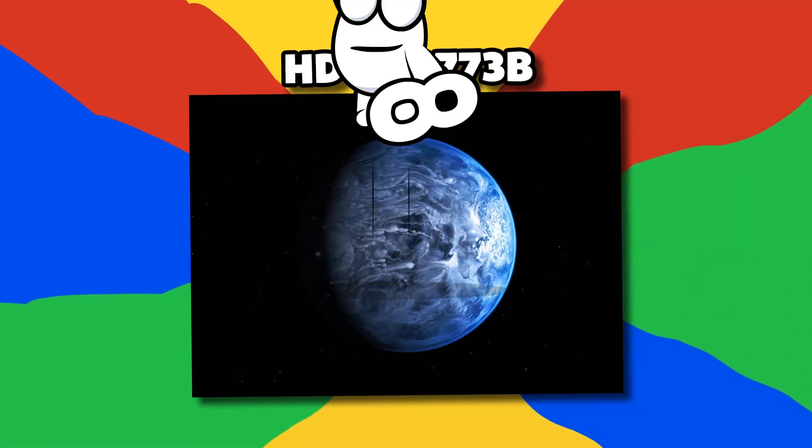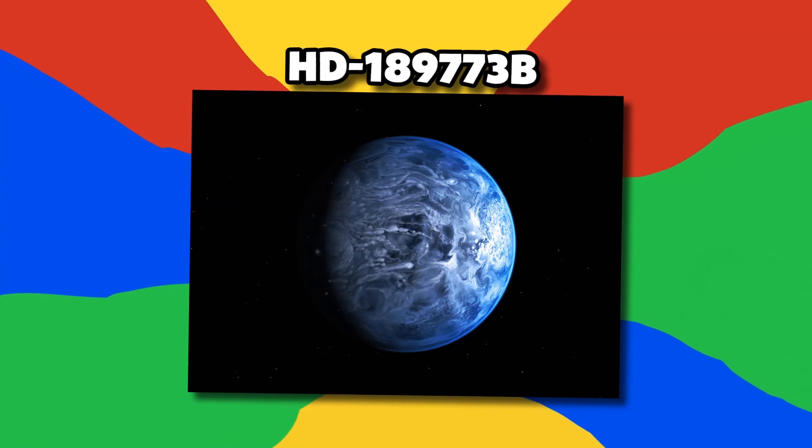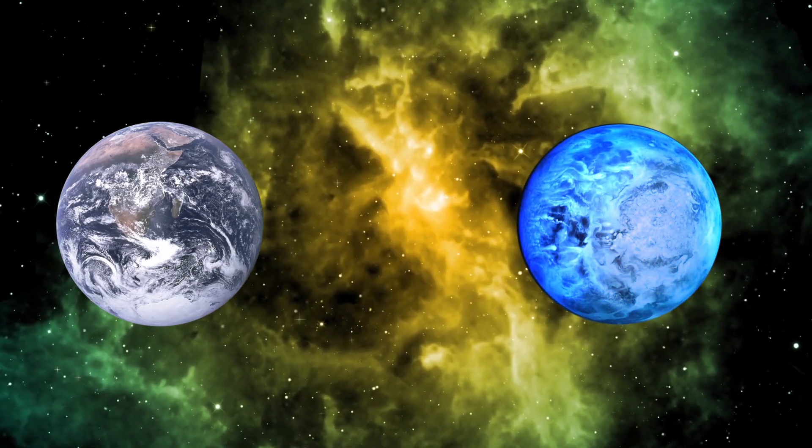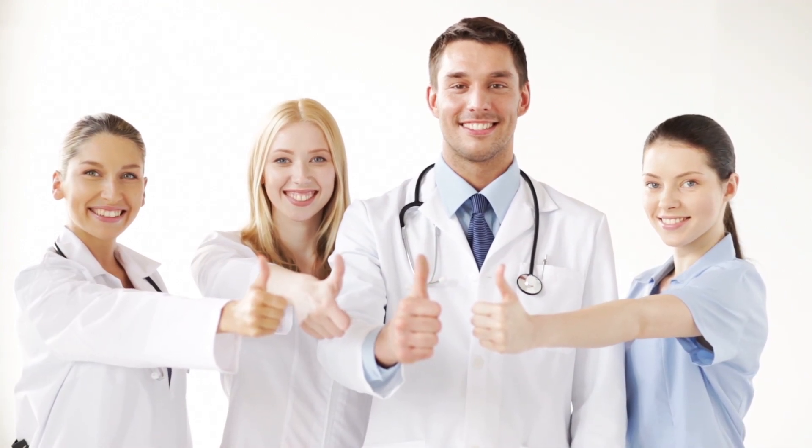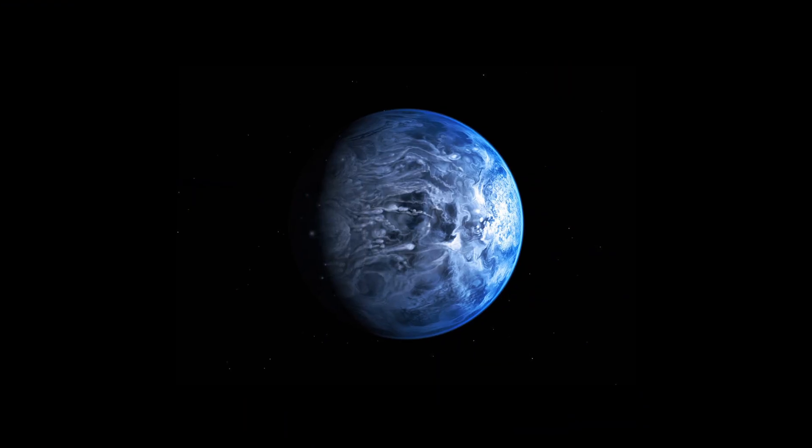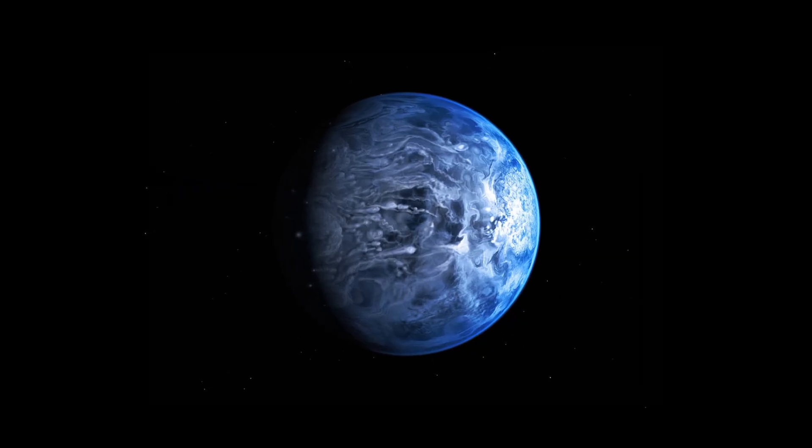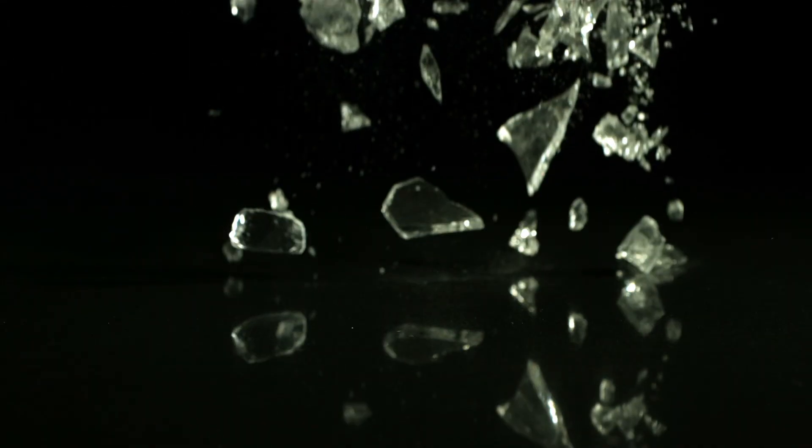Number 8, HD-189-773b. Possessing a blue color similar to our planet, you would think that this extrasolar planet is a safe place to live. Looks can be deceiving, however, as this planet holds a terrible secret. This planet rains shards of glass.